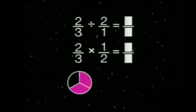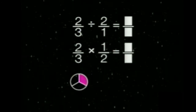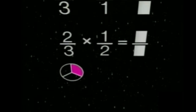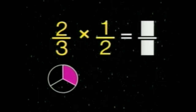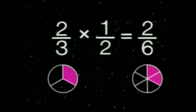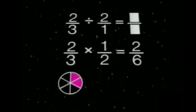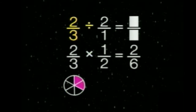Here's two thirds. We'll divide it by two — we'll just split it into two parts. Here's what we get: one third. We get the same thing if we multiply two thirds by one half. Two thirds times one half is two sixths. Here's a picture of two sixths. Two sixths is the same as one third.